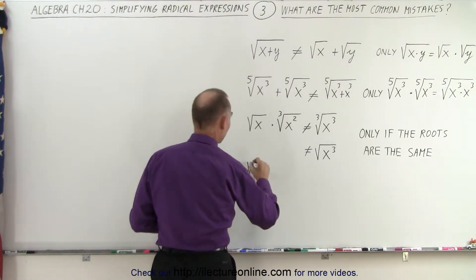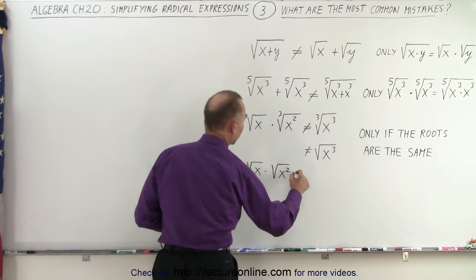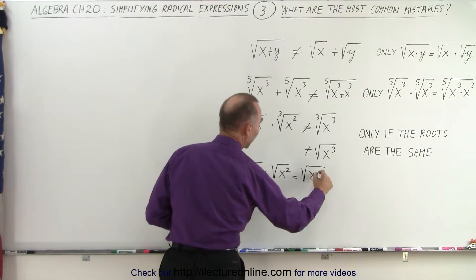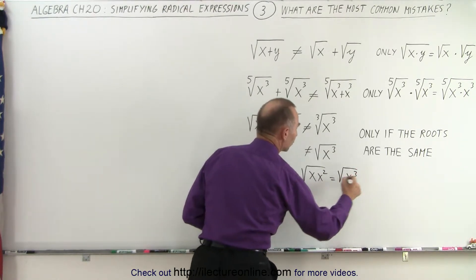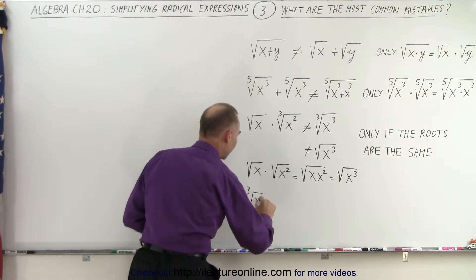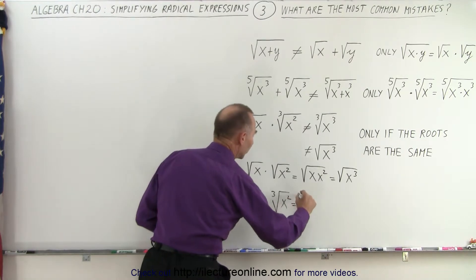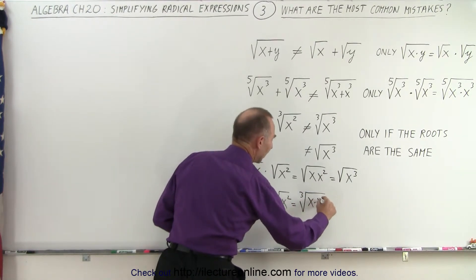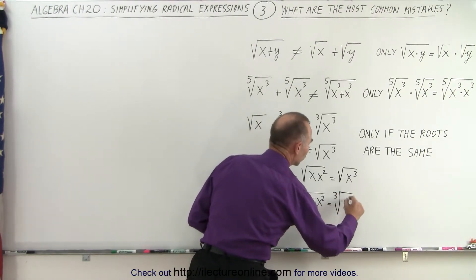Instead, if we have the square root of x times the square root of x squared, now that is equal to the square root of x times x squared, which is equal to the square root of x cubed. So that we can do, or if we have the cube root of x times the cube root of x squared, that is equal to the cube root of x times x squared or the cube root of x cubed.